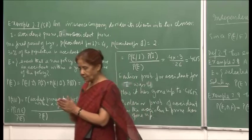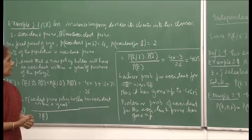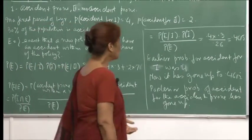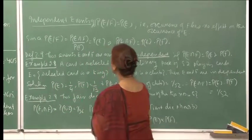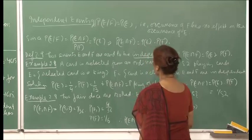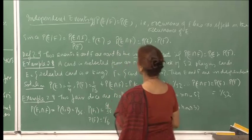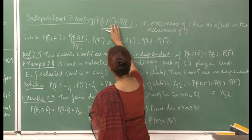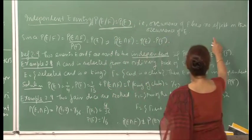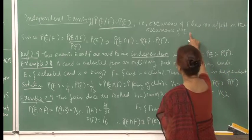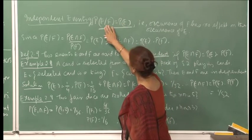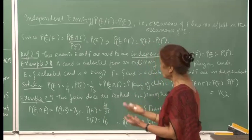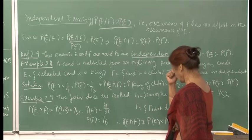The moment you define conditional probability, you arrive at the concept of independent events. If P(E|F) = P(E), that means the occurrence of F has no effect on the occurrence of E, since the probability has remained unchanged even knowing F occurred. By definition of conditional probability, P(E|F) = P(E ∩ F)/P(F) = P(E) implies P(E ∩ F) = P(E)×P(F).